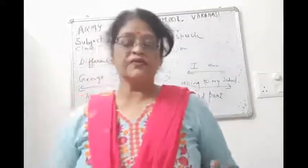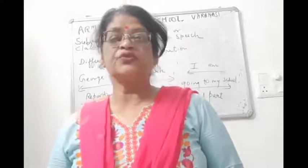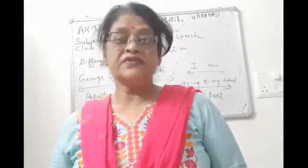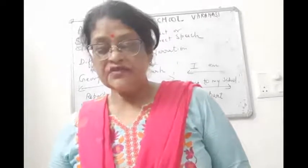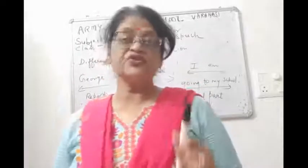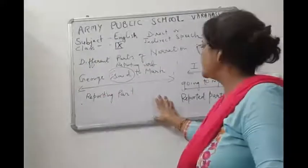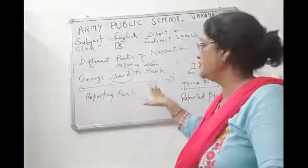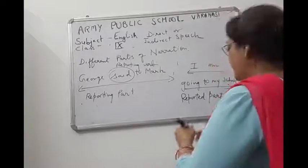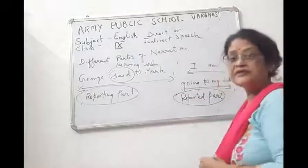So, to summarize what we have done: reported speech is also known as narration. Direct speech is the exact word of the speaker, written in inverted commas. Indirect speech is how you express the exact word of the speaker in your own words — it is also known as reported speech. The first part outside the inverted comma is the reporting part, and the part inside the inverted comma is the reported part.